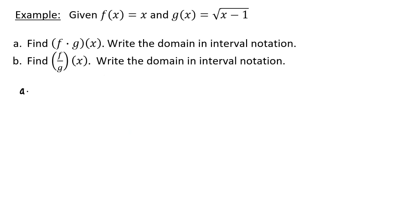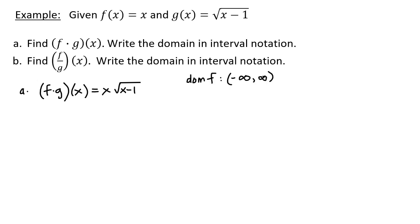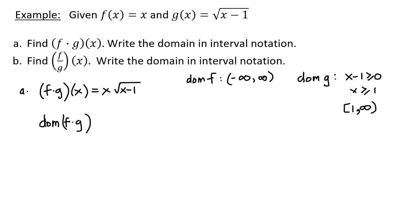Given f of x equals x and g of x equals the square root of x minus 1, in part A we find f multiplied by g of x, which equals x times the square root of x minus 1. The domain of f is all real numbers. For the domain of g, we need x minus 1 greater than or equal to 0, so x is greater than or equal to 1, giving the interval from 1 to positive infinity. The intersection of these domains gives the domain of f times g as 1 inclusive up to positive infinity.